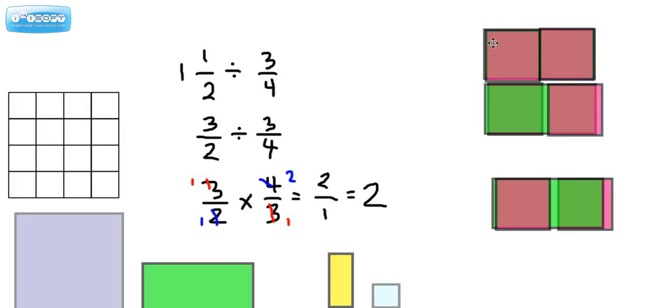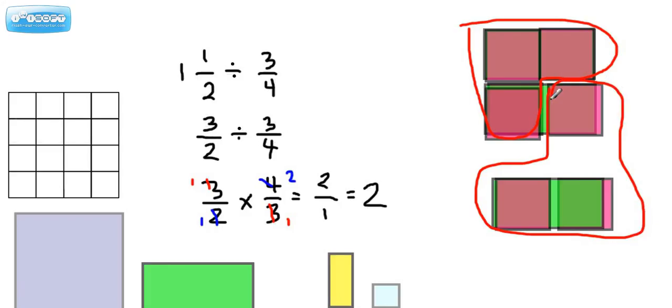All right, so again, let's kind of recap what we did. Let's move this right here. Let's circle our groups of three-fourths. Here's a group of three-fourths right here, and then we had another group right here. So if we count how many groups that is, isn't that two groups? See, one, two groups of three-fourths. So the answer is two. Check that out.